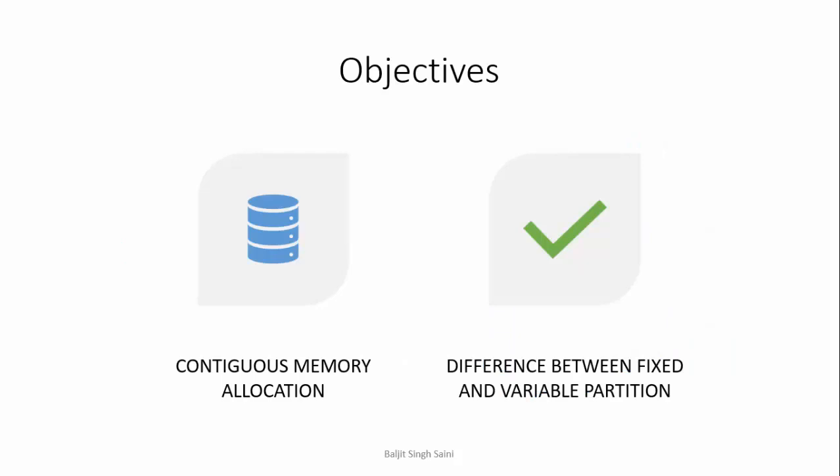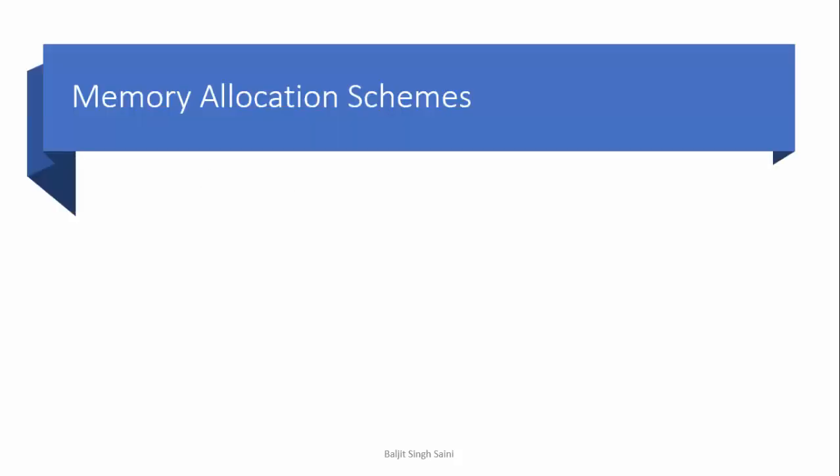The objectives of today's lecture are to understand the basics of contiguous memory allocation and the difference between fixed and variable partition. There are three memory allocation schemes: contiguous memory allocation, paging, and segmentation. We are going to focus only on contiguous memory allocation.